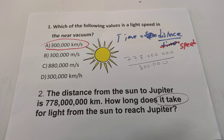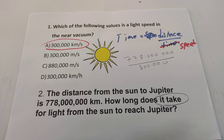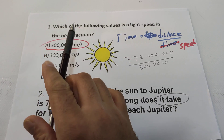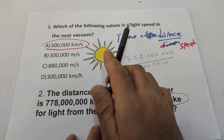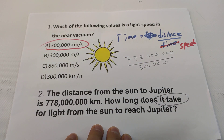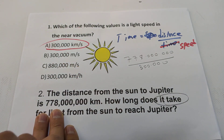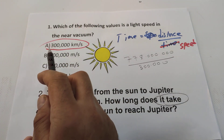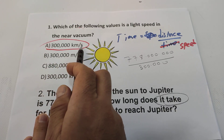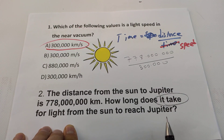Hi, Grade 9. Our topic is light and we are going to do revision. Let us solve some questions together. Which of the following values is the speed of light near the vacuum? Everyone knows it — 300,000 kilometers per second.